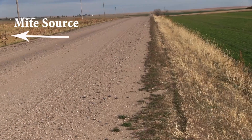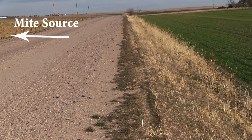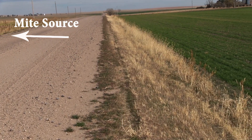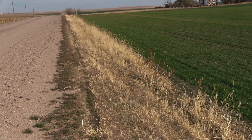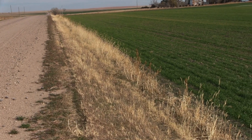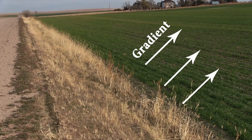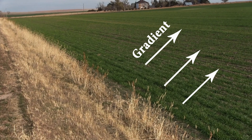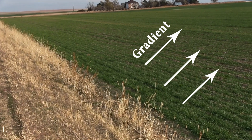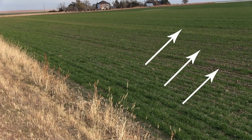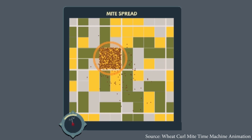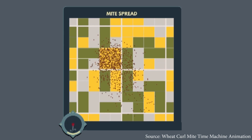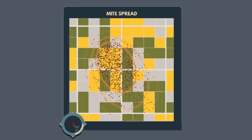At a larger spatial scale across the field, there is often a gradient pattern of symptoms creating a border effect, with the most severe yellowing occurring near the mite and virus source. However, if the mite virus source is large and heavily infested with mites, this gradient may extend up to a mile or more. Thus, fields adjacent to the source will appear uniformly damaged.